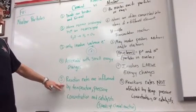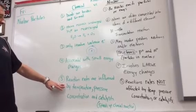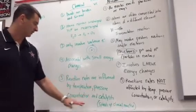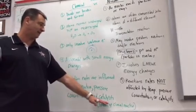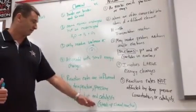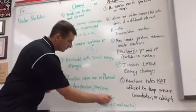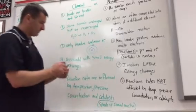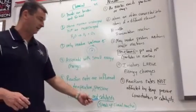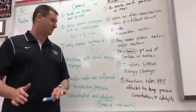So number five is the reaction rates of chemical reactions are influenced by temperature, pressure, concentration, and catalysts. And a catalyst is something that speeds up a chemical reaction. So that's going to be a vocab word you're going to need to know. A catalyst speeds up a chemical reaction. An inhibitor is something that slows a chemical reaction down.